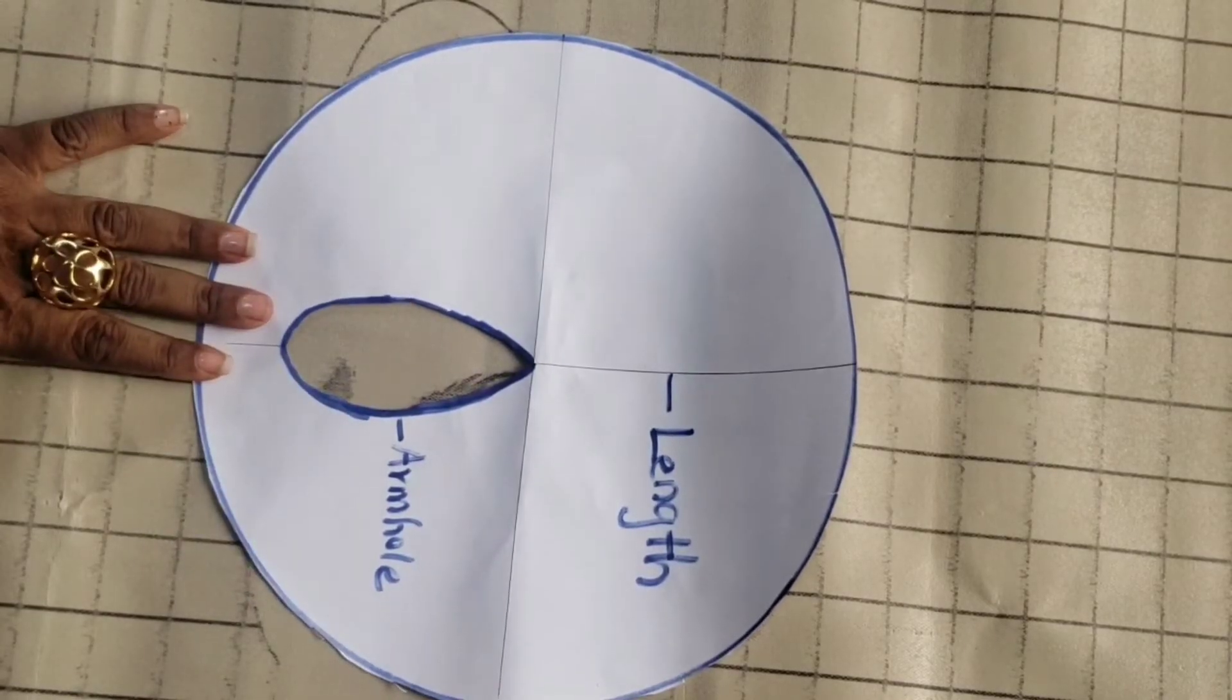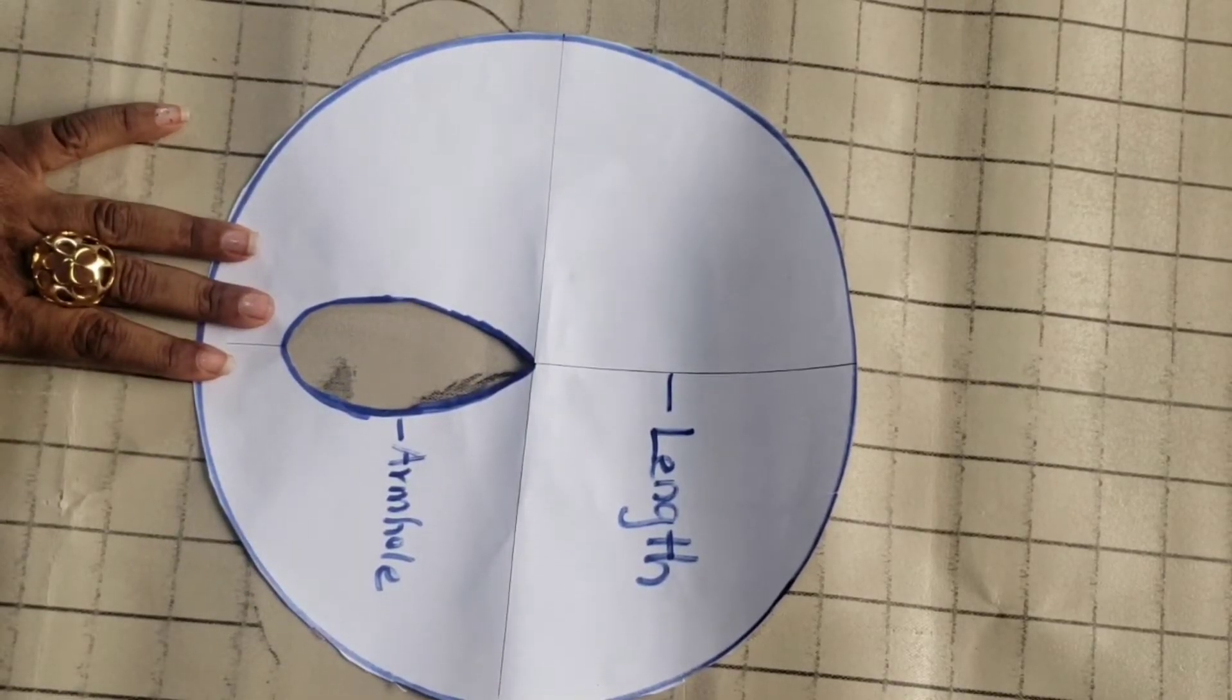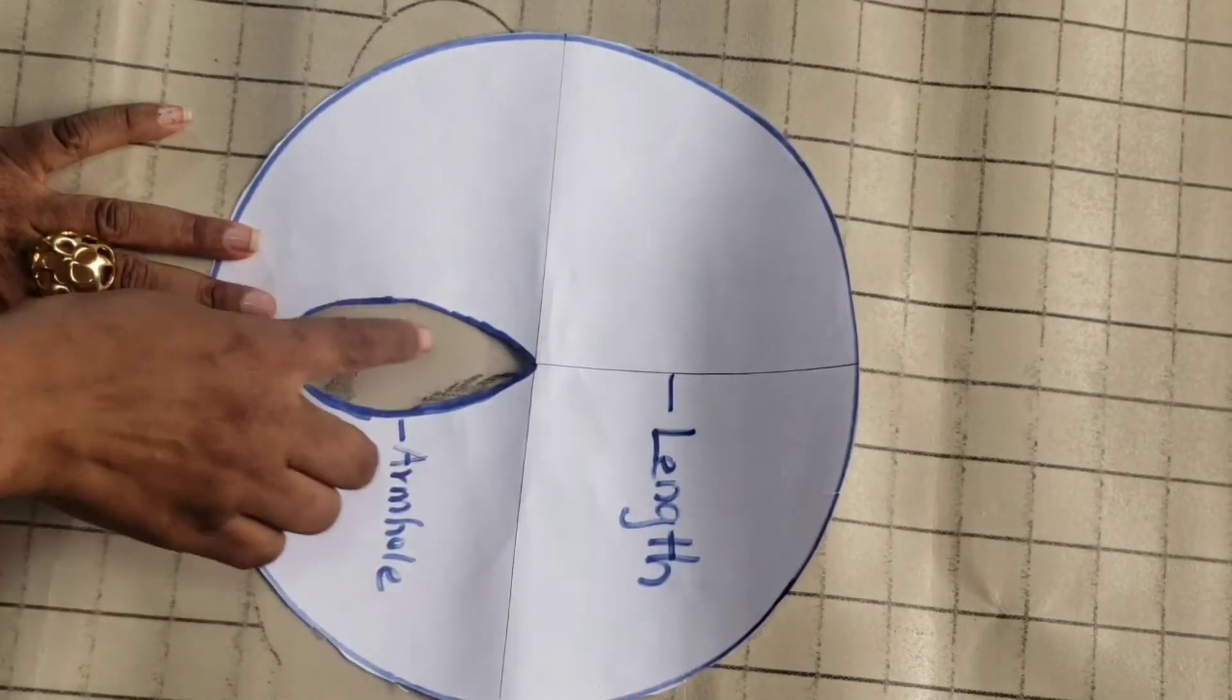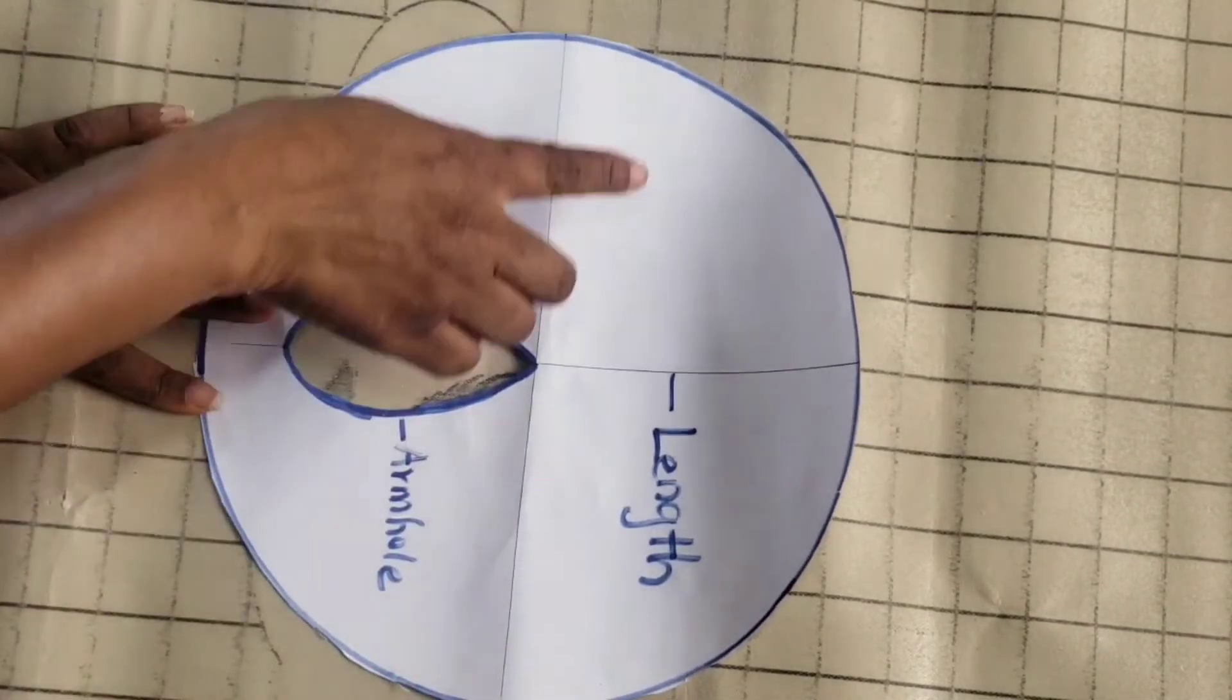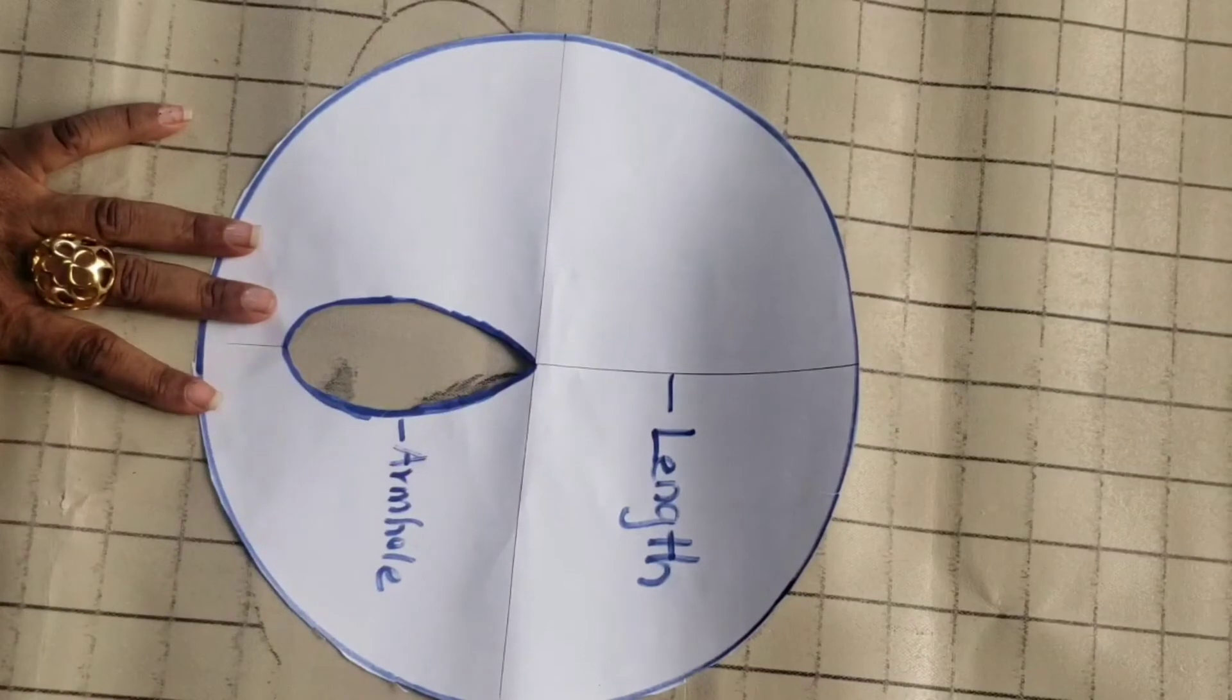This is the pattern piece of what the finished sleeve should look like. This part is the armhole while all the sides represent the length of the sleeve.